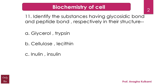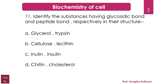C) inulin and insulin, D) chitin and cholesterol. The correct answer for this question is C. Now let's understand all the options. Glycerol, the first option, is a lipid, and trypsin is an enzyme which is produced in the form of a proenzyme called trypsinogen.